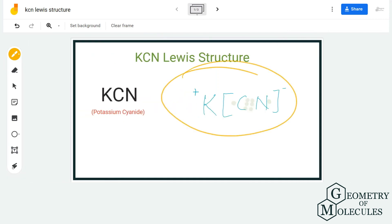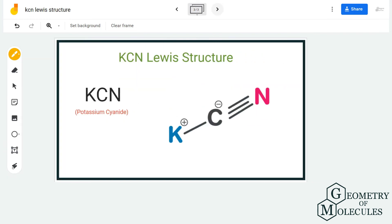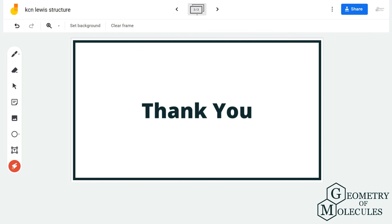In which you can see that potassium is giving away its only electron to the cyanide ion. So this is the Lewis structure for KCN. For more such videos on Lewis structures, molecular geometry, and polarity of molecules, make sure to subscribe to our channel. Thanks for watching!